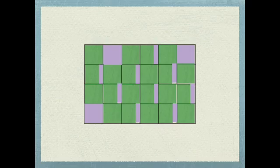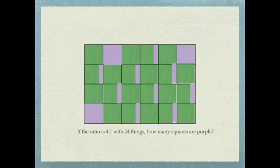Now I have colored in completely 24 things with a ratio of 4 to 1. If the ratio is 4 to 1 with 24 things, how many squares are actually purple? Let me count the purple squares: 1, 2, 3. If I have colored in four green bars and one purple bar in each square...